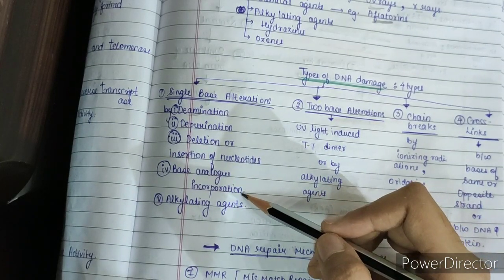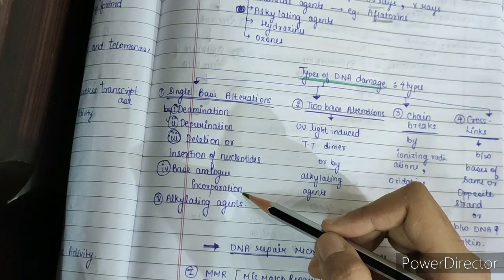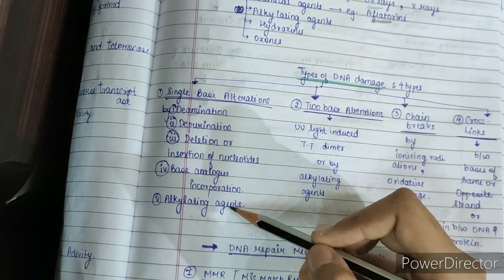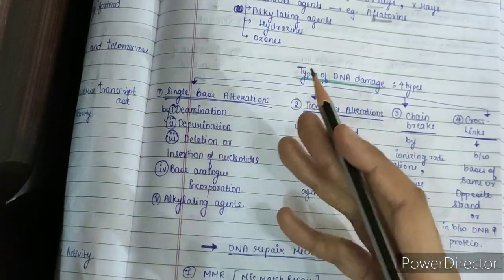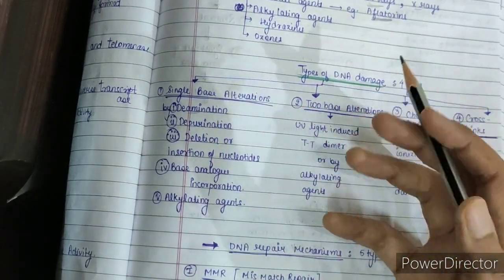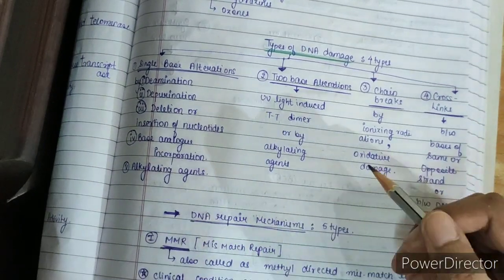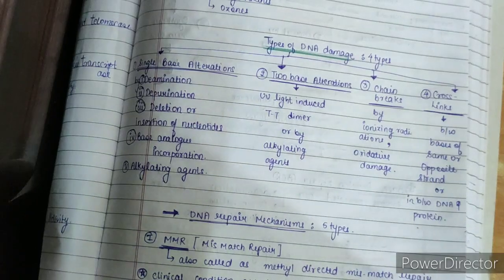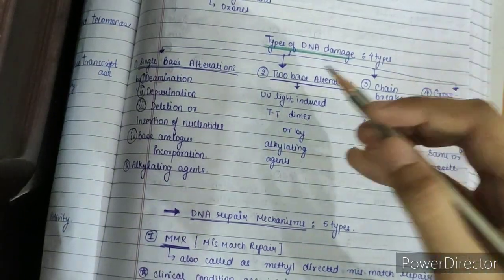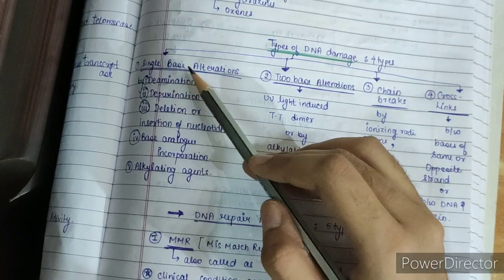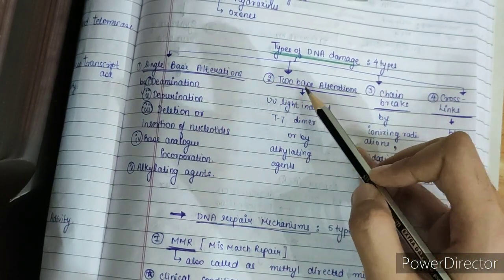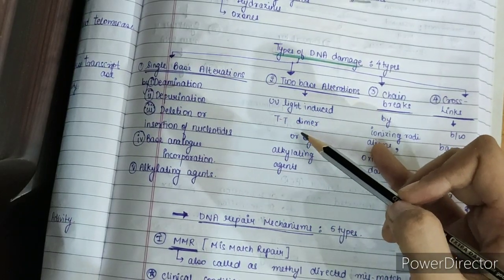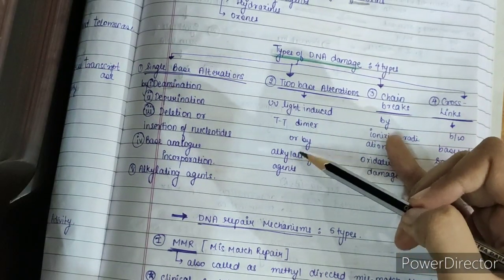Base analog incorporation means a similar base replaces the original — for example, uracil's place may be taken by 5-fluorouracil. Alkylating agents provide another example: guanine is converted to 6-methyl guanine. Normally guanine pairs with cytosine, but methyl guanine will not pair with cytosine, which creates a problem. The second type of DNA damage is 2-base alteration, induced by UV light causing TT dimer or pyrimidine dimer formation, or by alkylating agents.